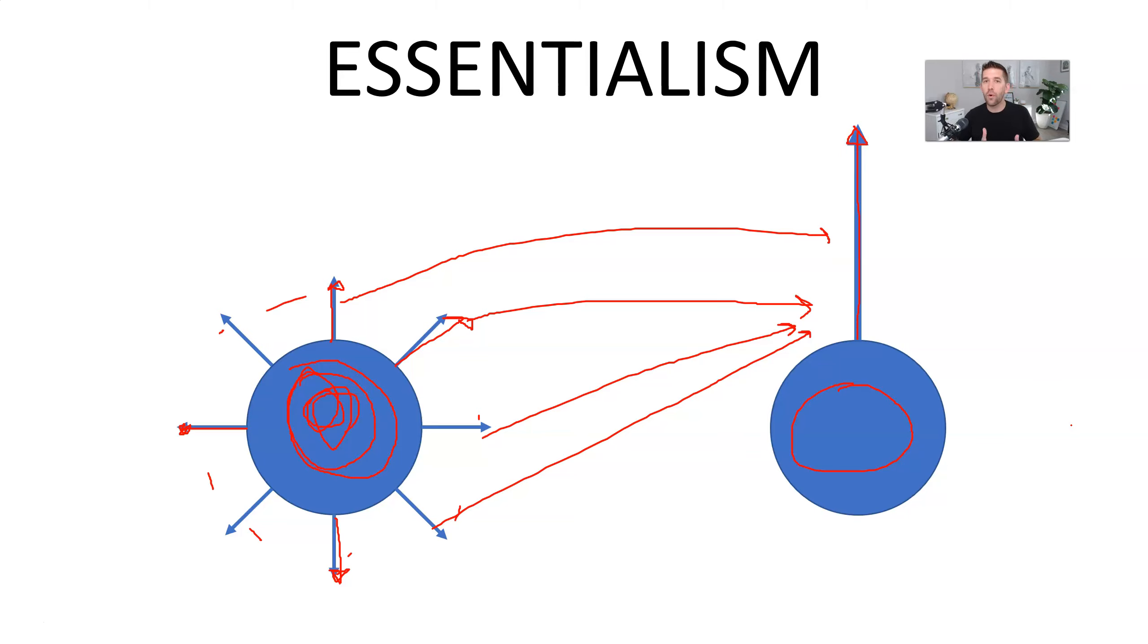Let's say that that thing is launching your first online course and marketing the heck out of it. At the end of one month, one year, one decade, which one of these different models, which one of these circles do you feel is going to go further and faster? I can almost guarantee you it's going to be this guy right here, because you have basically said no to anything that is not essential. And that is essentialism.